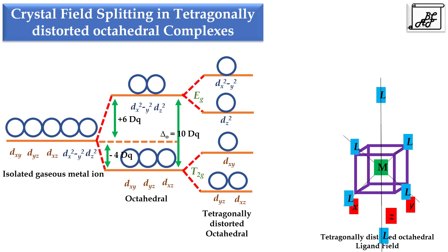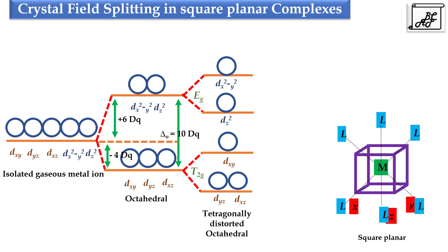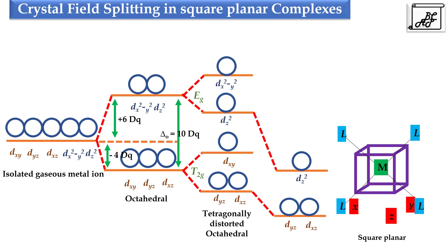We can see that dyz and dxz have similar energy, then there is dxy, then dz², and finally dx²-y² which has the highest energy. From this we can also understand the crystal field splitting in square planar complexes. For square planar complexes, the ligands along the z-axis are removed. Once the ligands along the z-axis are removed, there is no repulsion at all along the z-axis. The energy of the dz² orbital is lowered to a greater extent. Similarly, there is less repulsion for dyz and dxz, hence their energy is also lowered.